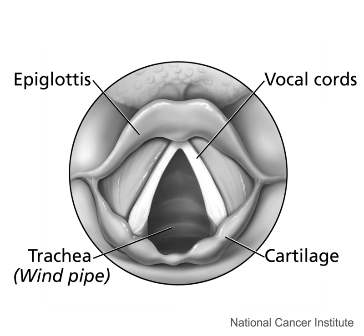Uvular consonants are made by the tongue body contacting or approaching the uvula. They are rare, occurring in an estimated 19% of languages, and large regions of the Americas and Africa have no languages with uvular consonants. In languages with uvular consonants, stops are most frequent followed by continuants including nasals.